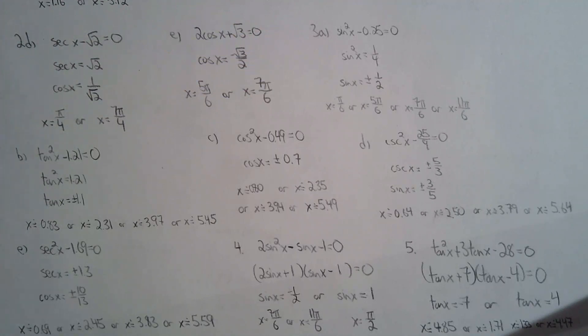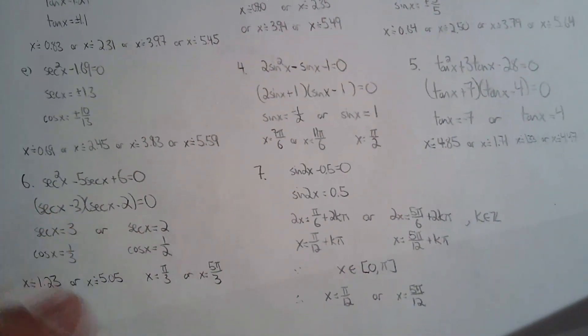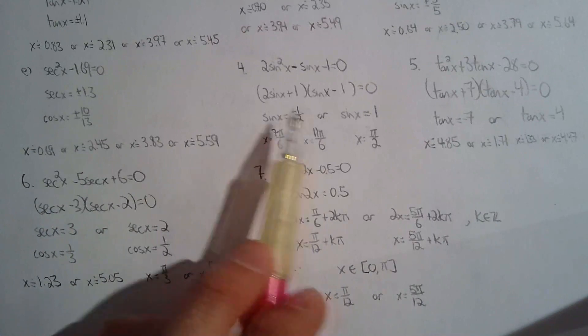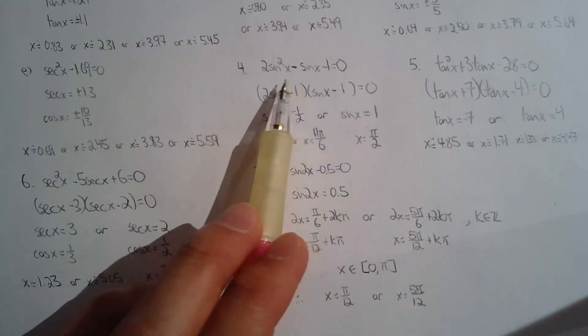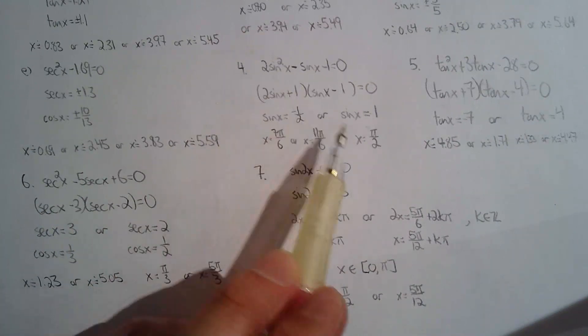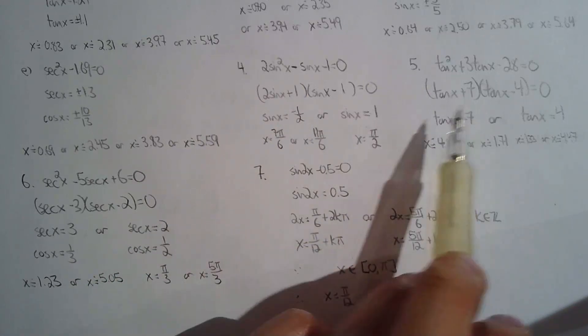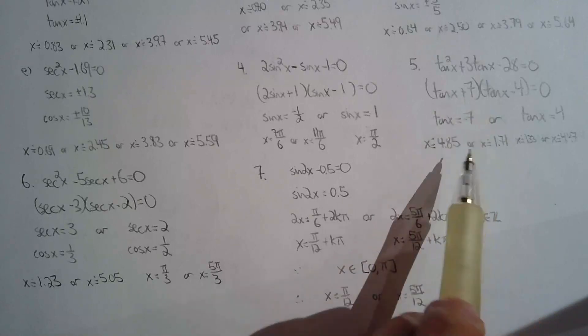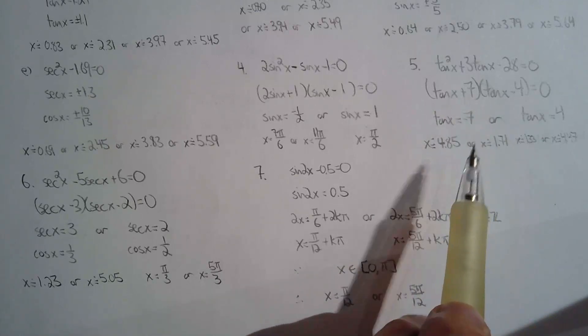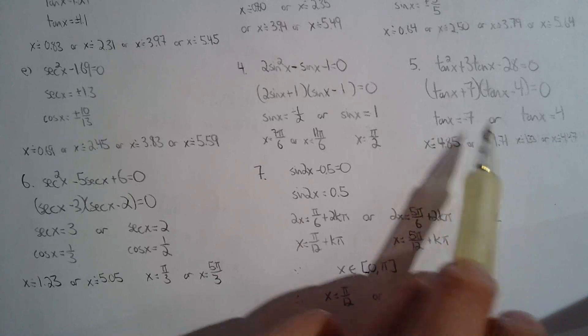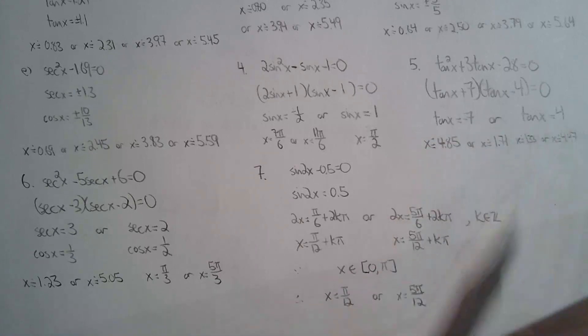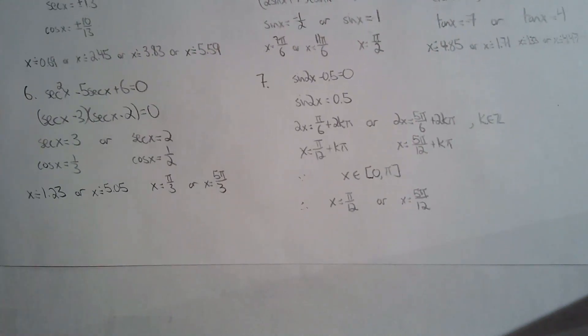Question four, nothing special—you basically have a trinomial, factor it, and you get your exact answers. Same with number five, you have to factor, it's a simple trinomial essentially, but use a calculator because negative seven is not a nice ratio, as well as four. Question six, factor, not much to say, simple trinomial. Go from secant x to cos x.